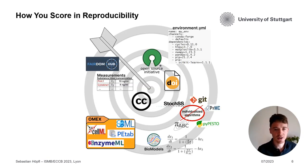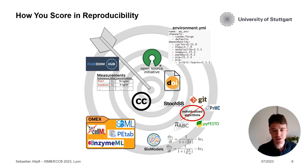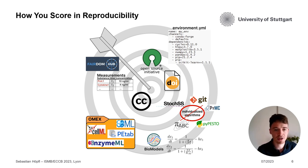So how can you score in reproducibility? You can use modeling standards like SBML, PTAP, or EnzymeML. You can use algorithms already available in the community that can be reused by others. And you should upload your code, data, and model into public repositories.